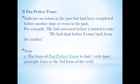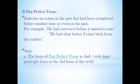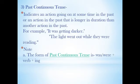Past perfect tense indicates an action in the past that had been completed before another time or event in the past. For example: 'He had exercised before it started to rain'; 'He had slept before I came back from the market.' The form of past perfect tense is 'had' plus verb in past participle form (third form of the verb). A clue word: past perfect tense must always include 'had.'